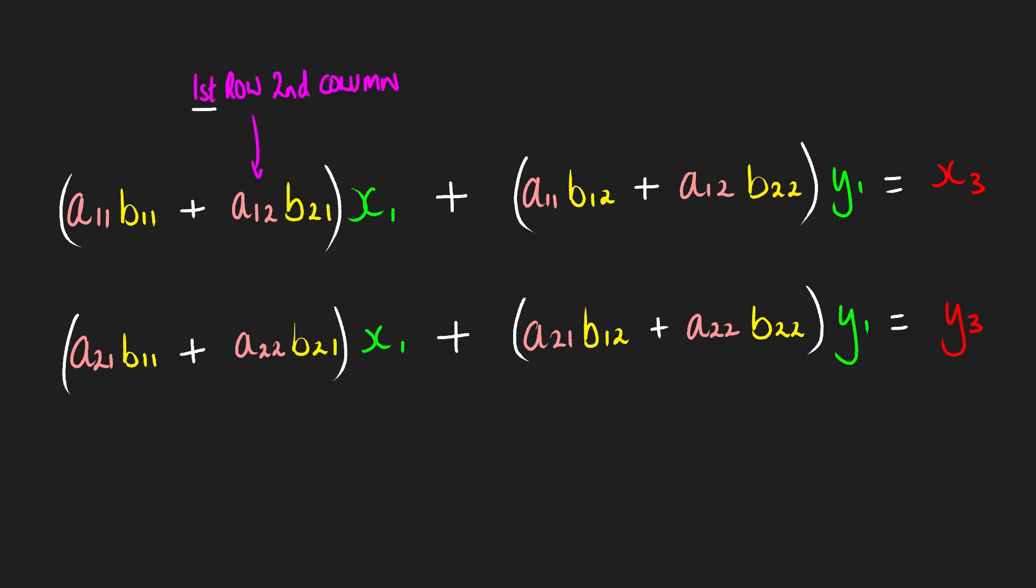So if you notice in the top equation, all of the a variables have the first subscript of one in their coefficients. And notice how the b variable in the coefficients of x1 and y1 remains constant dependent on the term that it was in. So the second subscript of all the b variables in each of the coefficients remains constant within that coefficient.